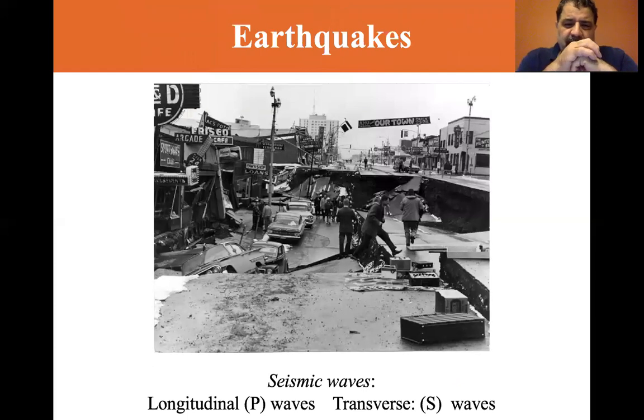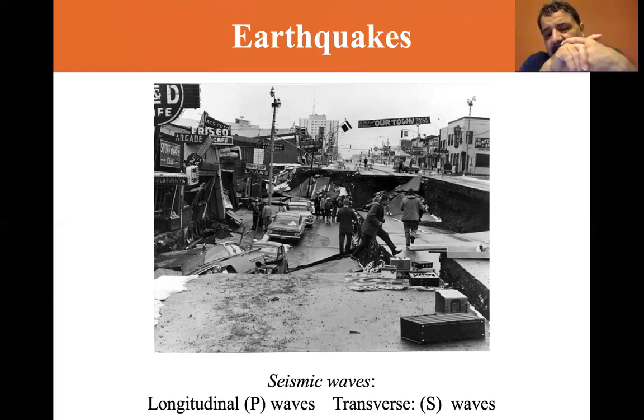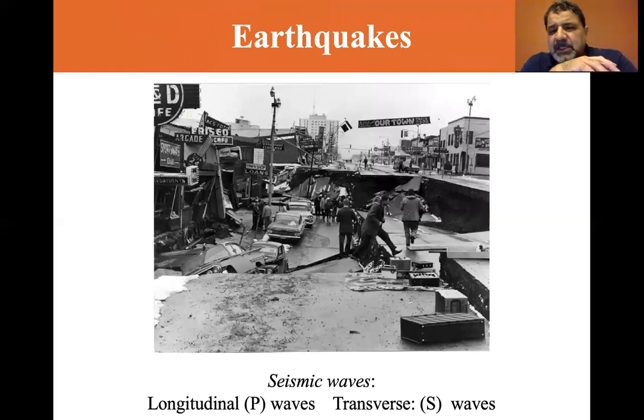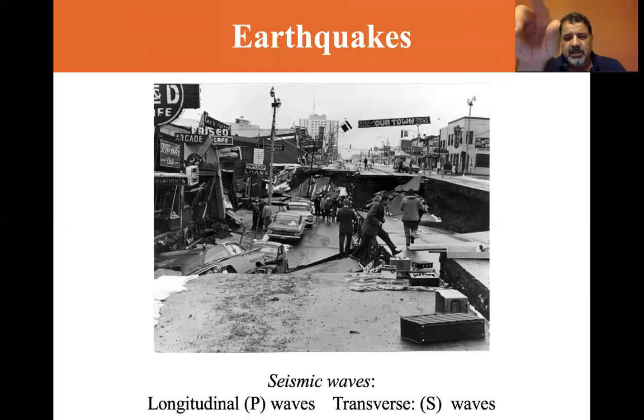Now we talk about earthquakes. We've already talked about longitudinal waves and transverse waves. And there are two types of seismic waves. The longitudinal P wave is called P because it's primary. It's the one that gets there first so that when a fault slips, it generates a longitudinal wave. I think they say it travels at about seven to eight kilometers per hour. Seven to eight kilometers per second is called the P wave.